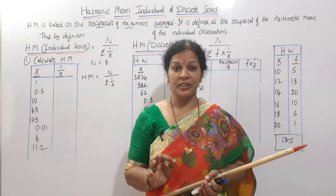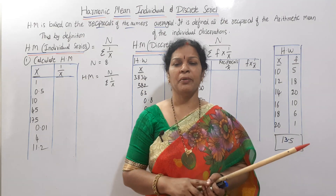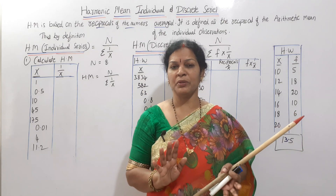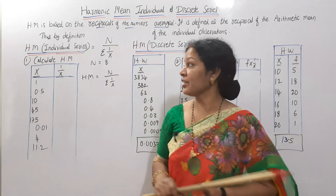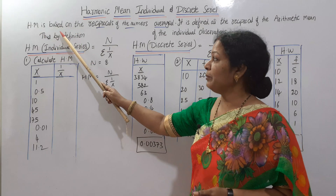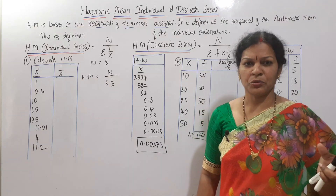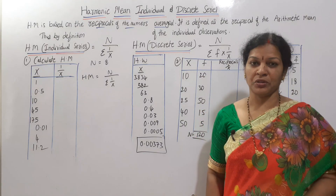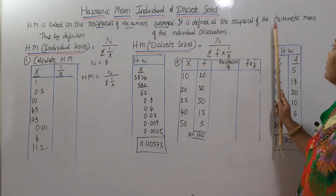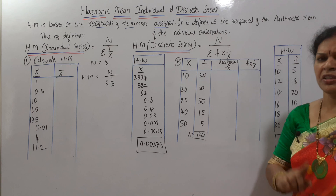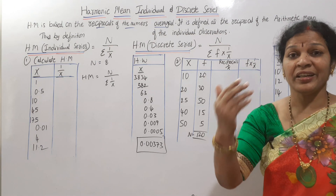Harmonic mean is equal to n divided by the sum of reciprocals. We are clear in the individual and discrete series. By definition, it is defined as the reciprocal of the arithmetic mean of the individual observations. Each individual observation has a reciprocal, and the arithmetic mean is of those reciprocals.